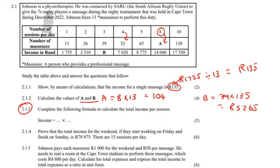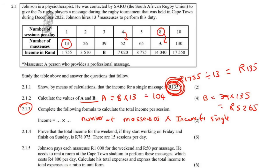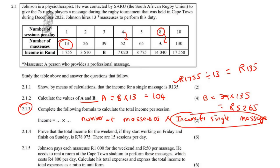The next question asks you to complete the formula to calculate the total income per session. What we did was take the number of masseuses and multiply it by the income for a single massage. So the formula is: number of masseuses multiplied by income for a single massage — or equivalently, multiplied by R135.